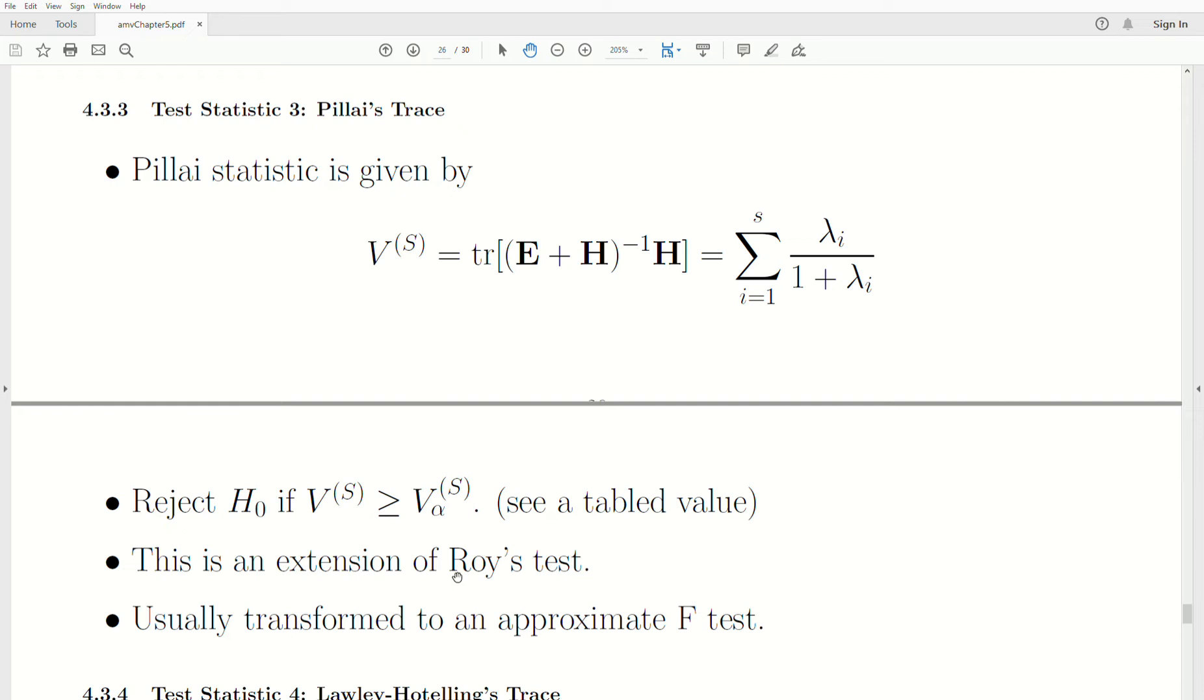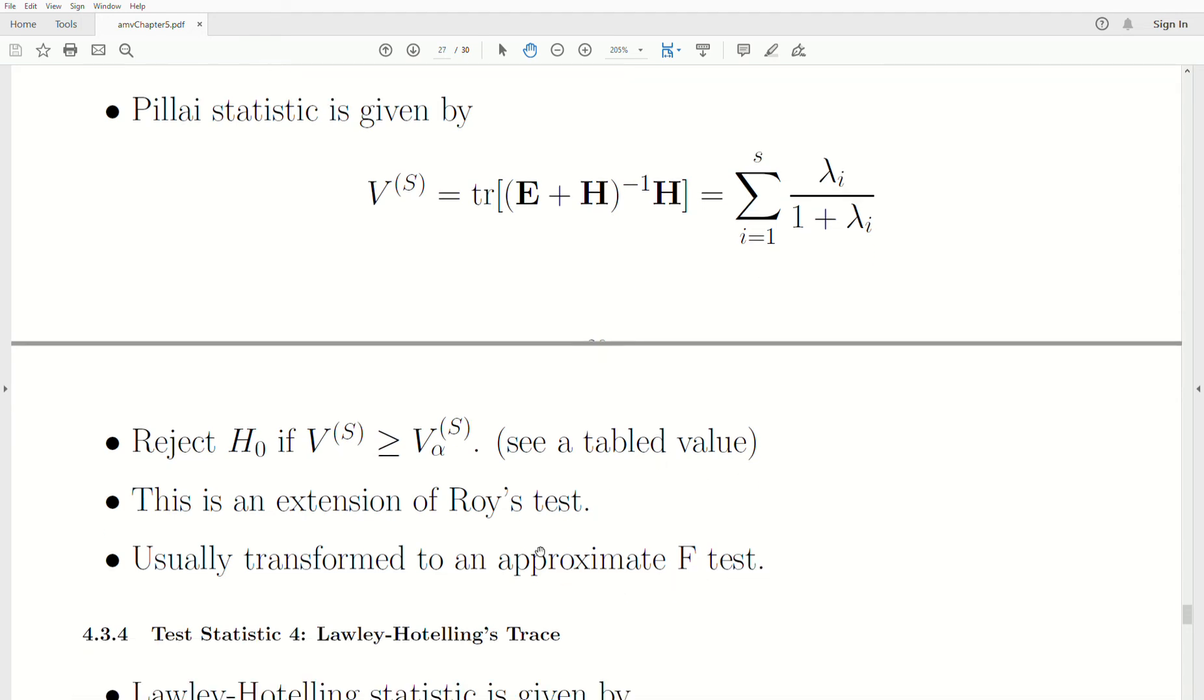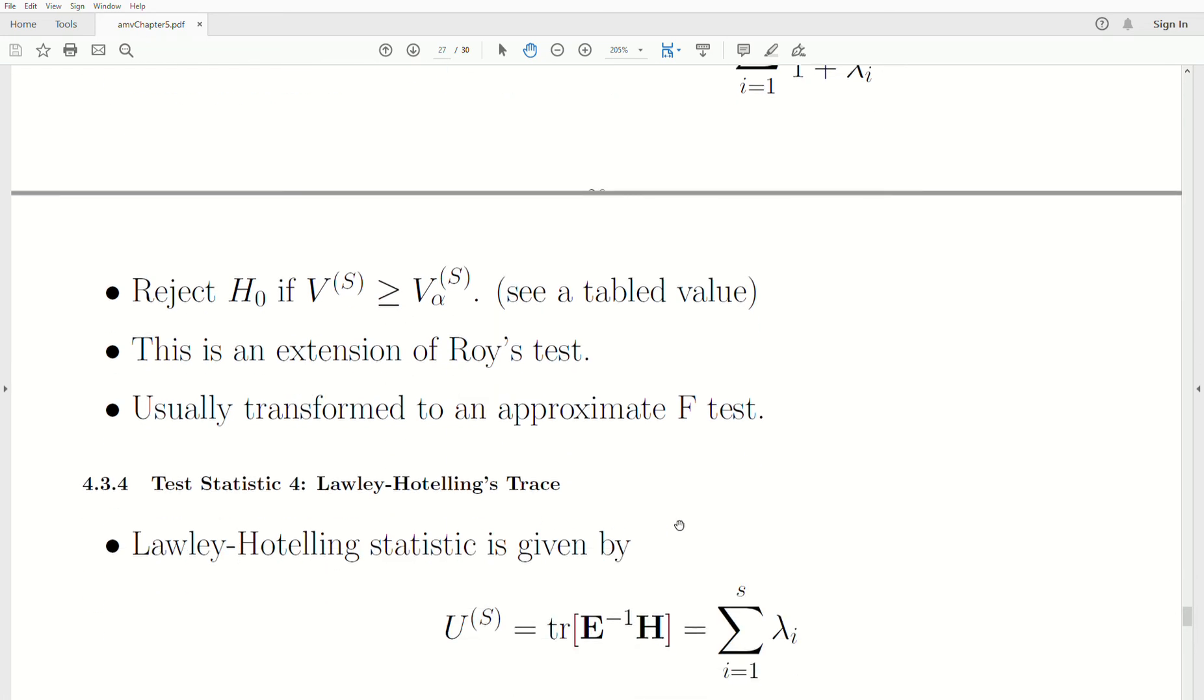Now, Roy's test is so powerful in a certain alternative hypothesis. So, if all the means lie in one direction, then Roy's test is very powerful, but that's rarely the case. And so, Roy's test ends up not being very useful in most situations. But this one does. Pillai's test is generally much more powerful. It ends up being R's default function or default test for MANOVA. And, again, it's usually transformed into an approximate F test.